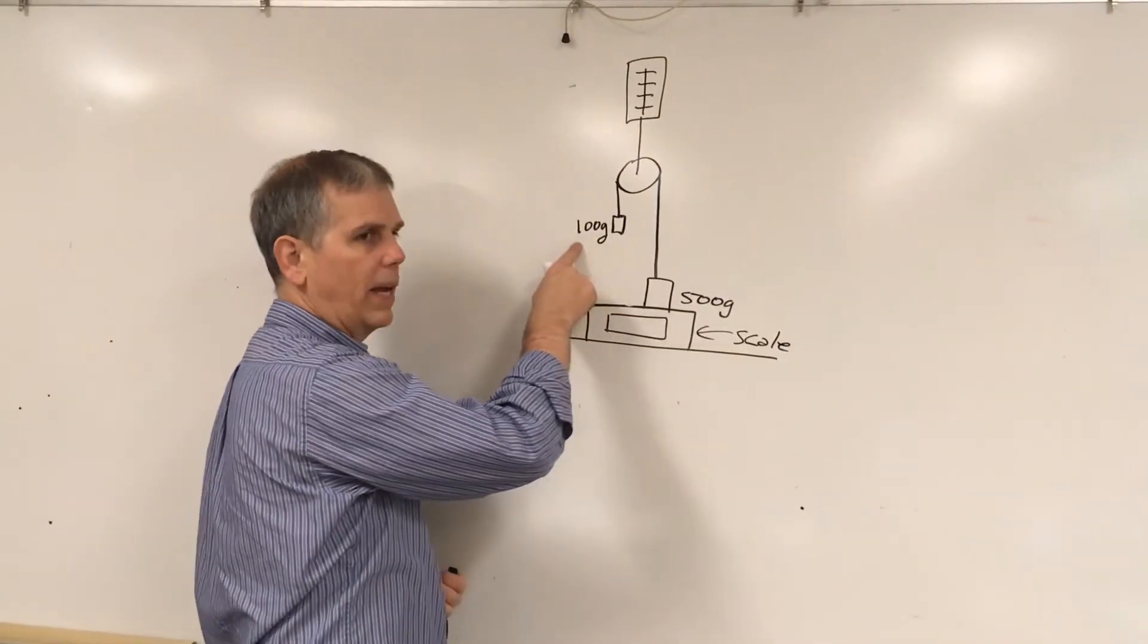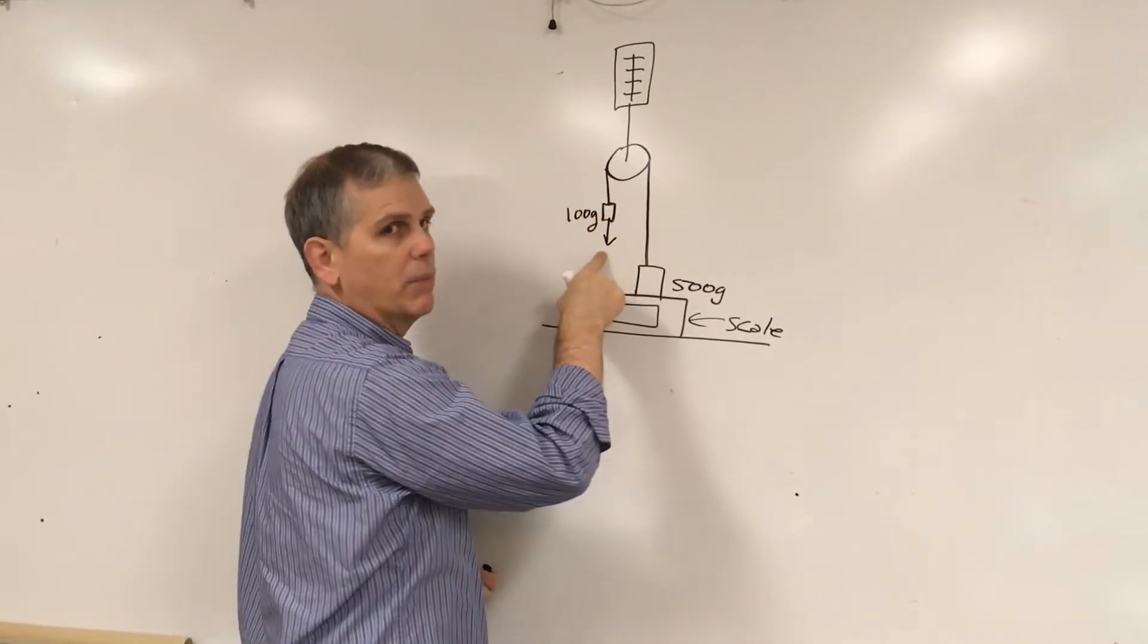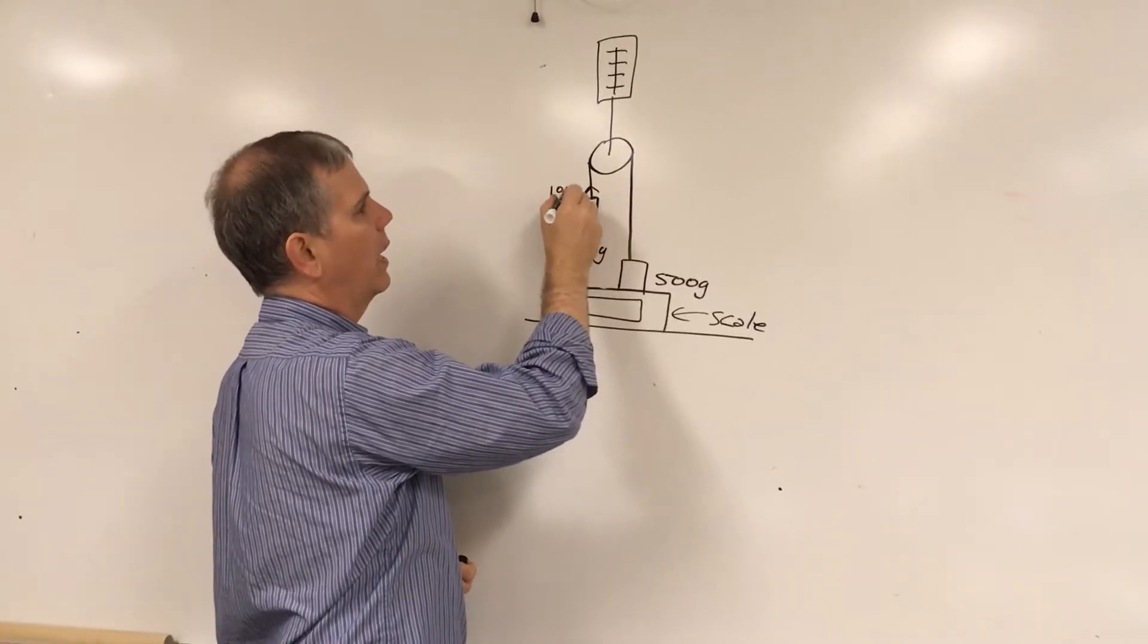Well here we have a 100 gram mass that is not moving so therefore this must be mg. We're just going to call that 100 grams though. So this tension here must be 100 grams.